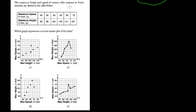The maximum height and speed of various roller coasters in North America is shown on the table below. Which graph represents a correct scatterplot of data? I'm just trying to take a look at the trend or slope here.